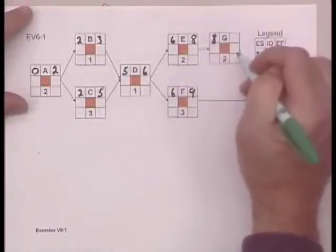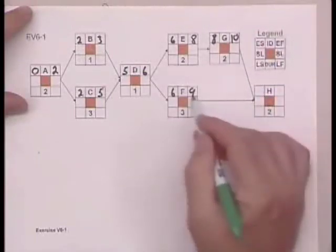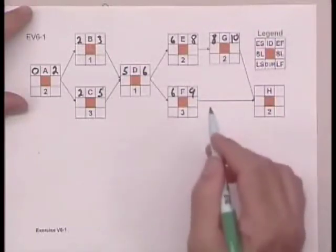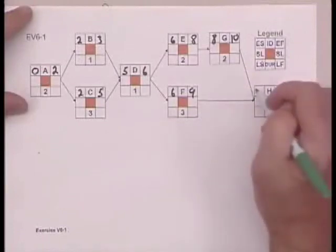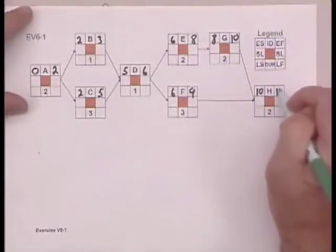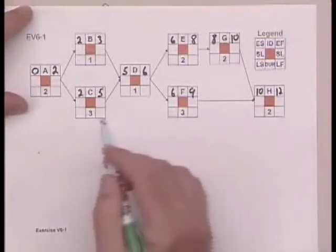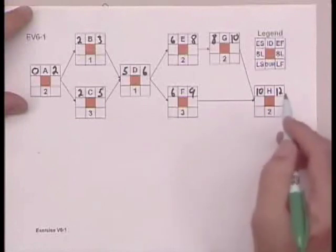G can start once E is done, which is ten. Now we have another choice, ten or nine. Remember that we choose the higher number, and that's ten, and then ten plus two is twelve. So the earliest that this whole project can be completed, if we're talking in terms of days, is twelve days.